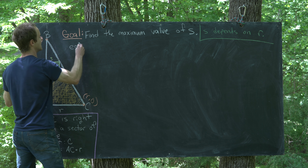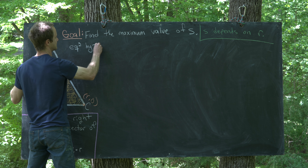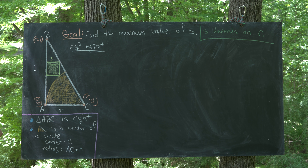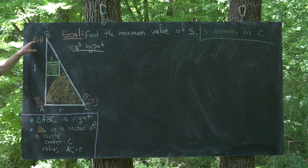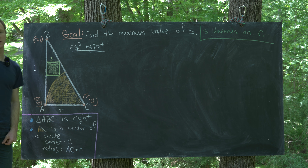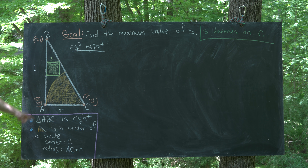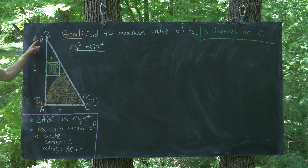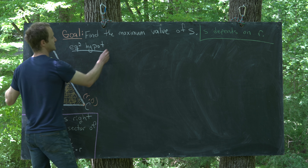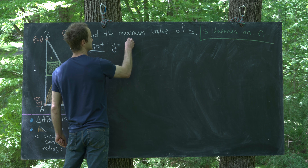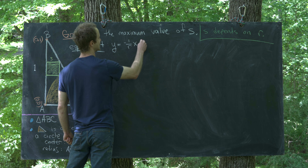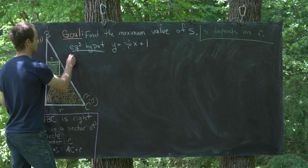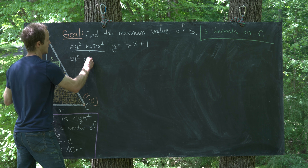First, the equation of the hypotenuse. Using point-slope form, noting it passes through (0, 1) and (r, 0), the slope is −1/r and the y-intercept is 1. So the hypotenuse has equation y = −(1/r)x + 1.